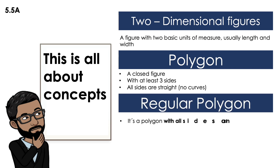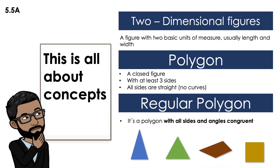Now let's talk about the regular polygon. It's a polygon with all sides and angles that are congruent. The first shape is a triangle with two sides congruent but one is not, so that cannot be a regular polygon. The second shape is a triangle with all its sides the same, so yes, that one is a regular polygon. The third shape is a quadrilateral, but the sides are not congruent, so it cannot be a regular polygon. The last one is a quadrilateral with all sides congruent, so the triangle and the square are regular polygons.